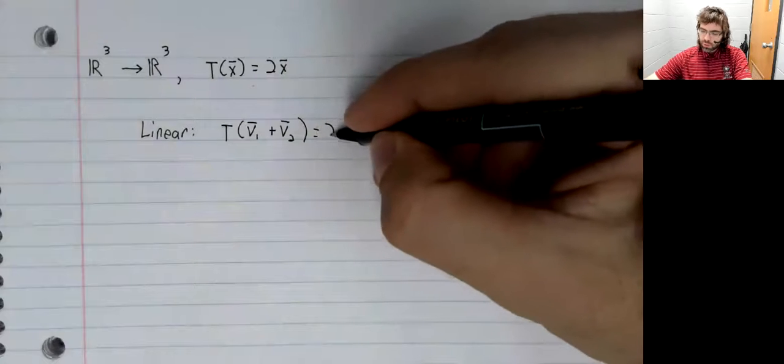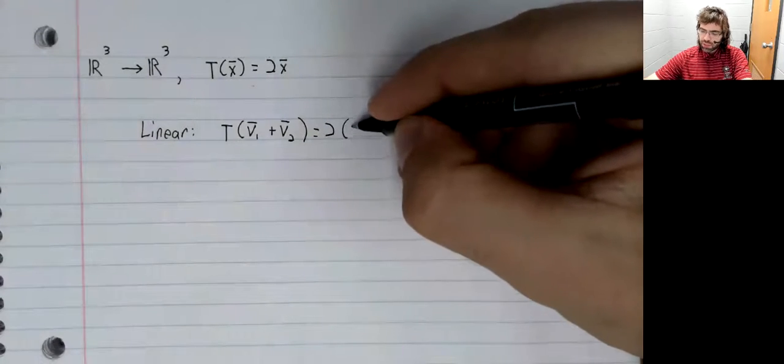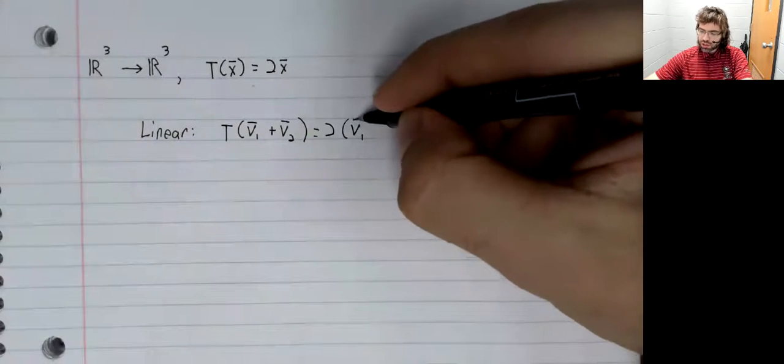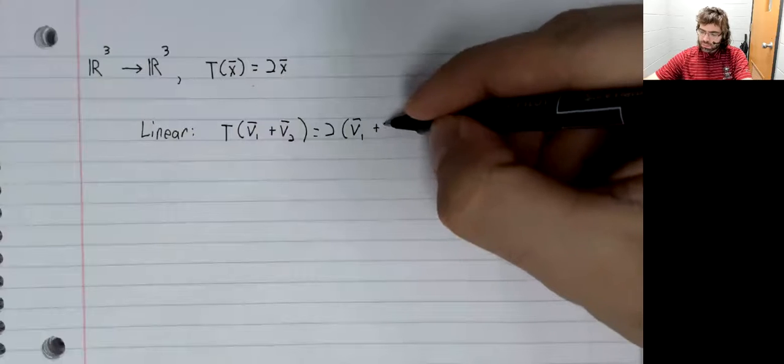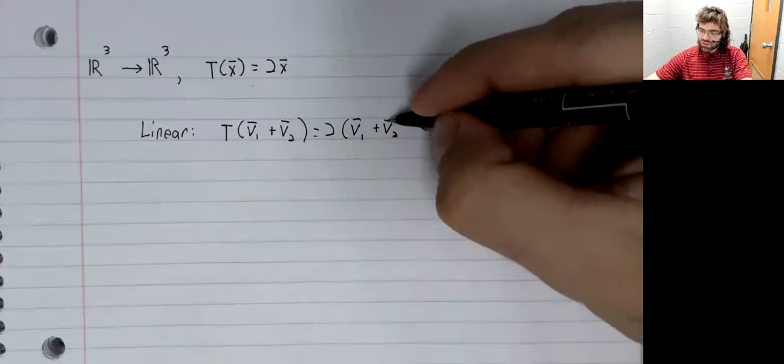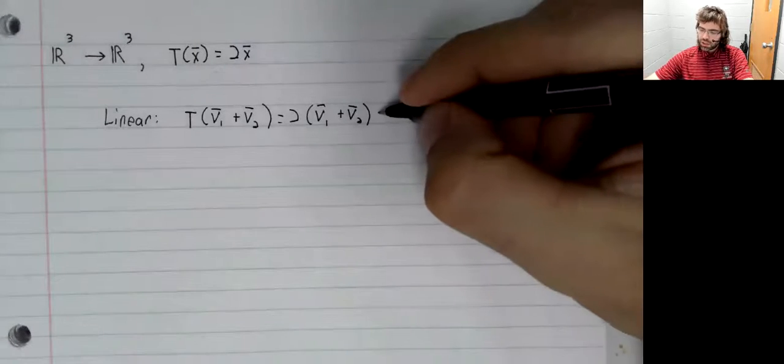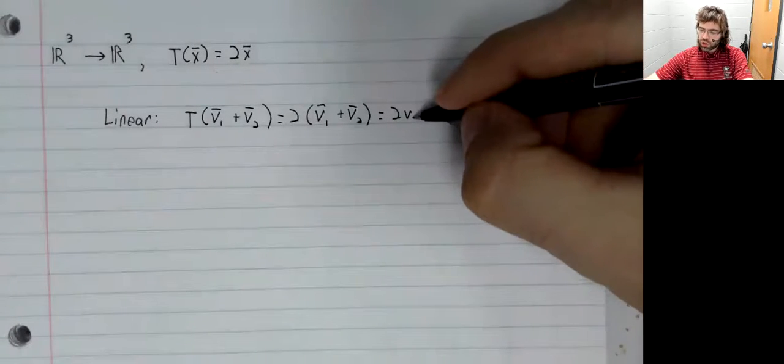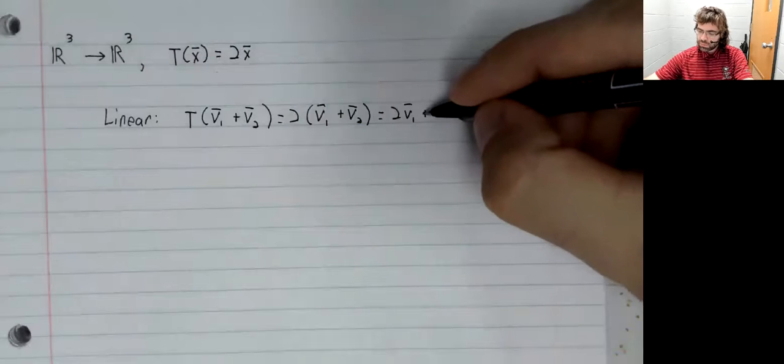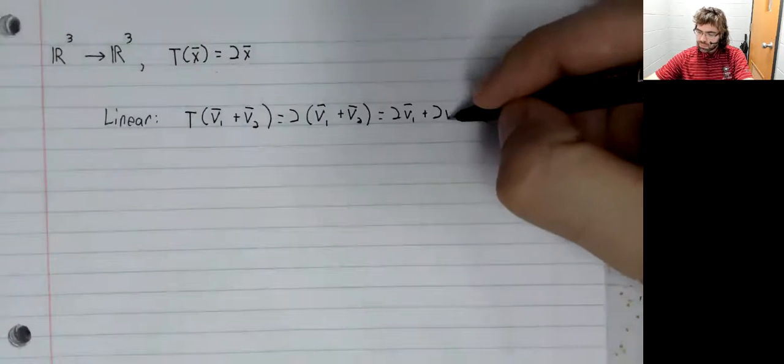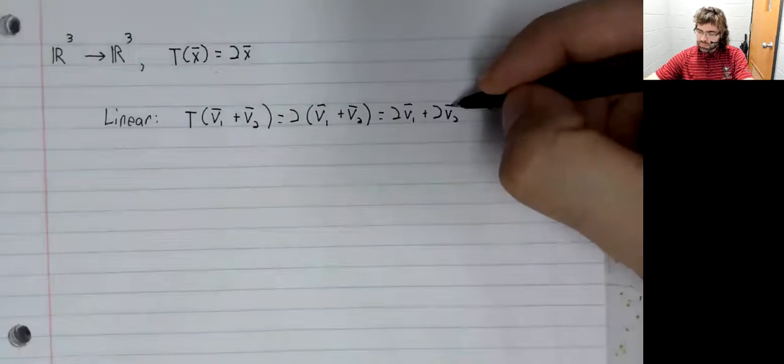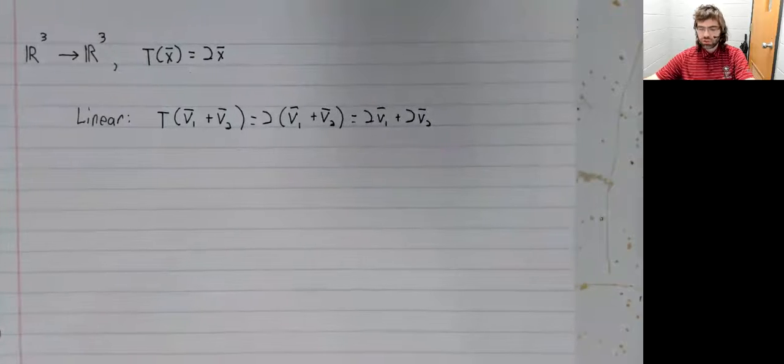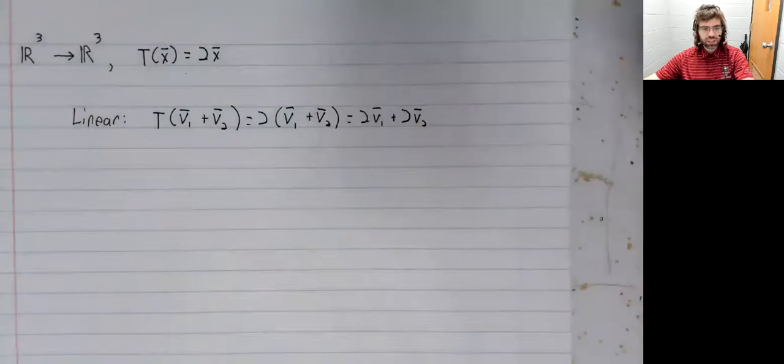Now, by definition, T of a vector is twice that vector. This scalar multiplication distributes over this addition.